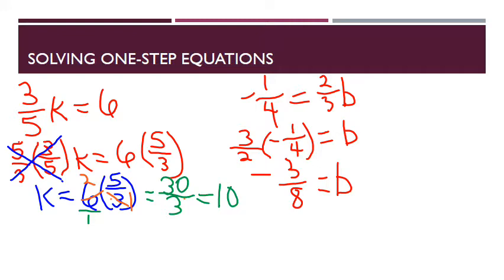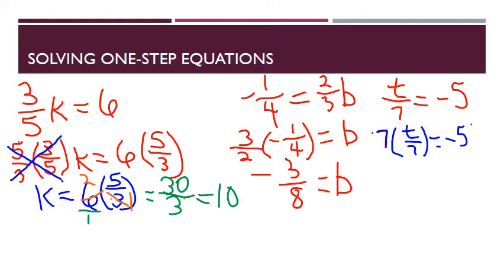One more: t over 7 equals negative 5. I've got the variable in the numerator of a fraction — really saying t divided by 7 — so the opposite of dividing is multiplying. I multiply both sides by 7: 7 times t over 7 equals negative 5 times 7. The sevens cancel, leaving t equals negative 35.